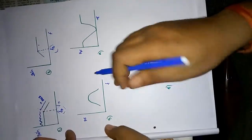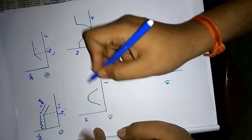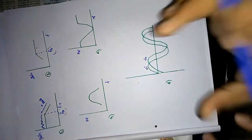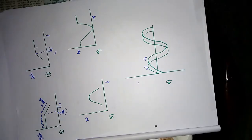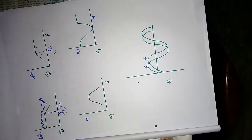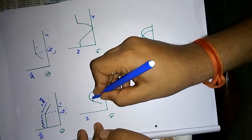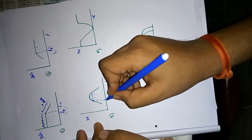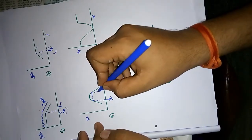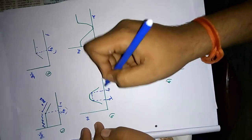A band pass filter passes a certain band of frequencies and blocks all other frequencies. To make a band pass filter, I make a series connection between a high pass filter and a low pass filter. This gives two frequency ranges: FL which is the low frequency cutoff for the high pass filter, and FH which is the high frequency cutoff for the low pass filter.